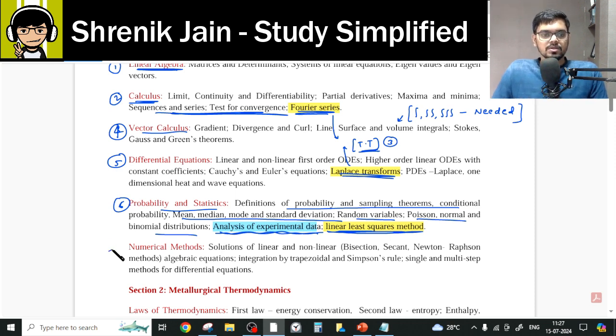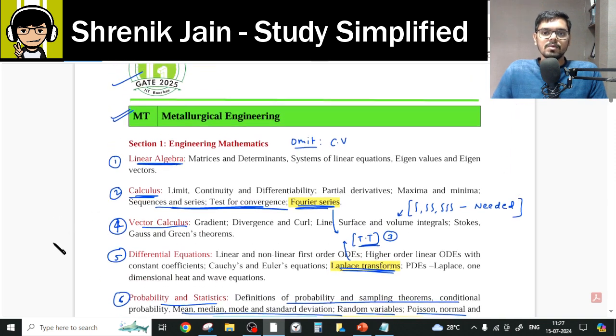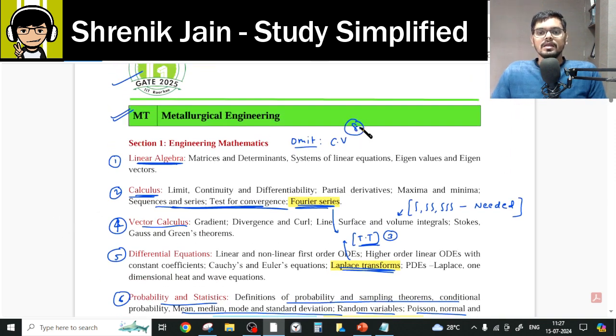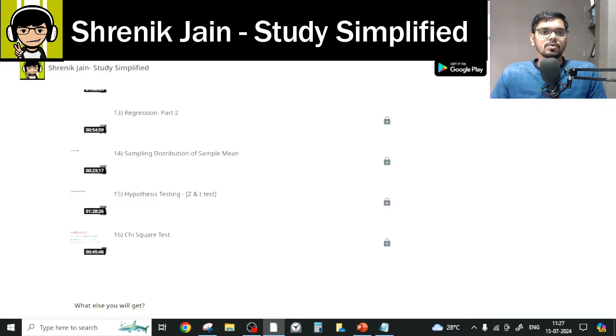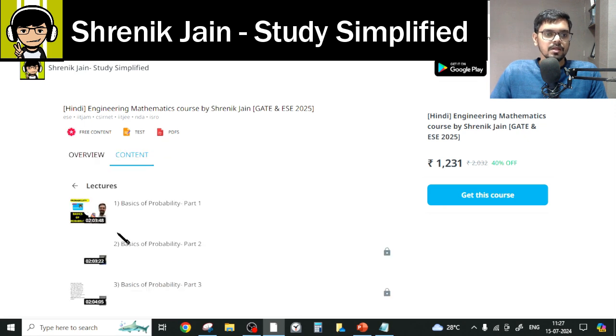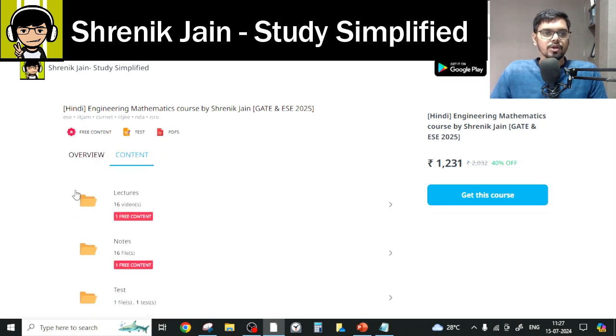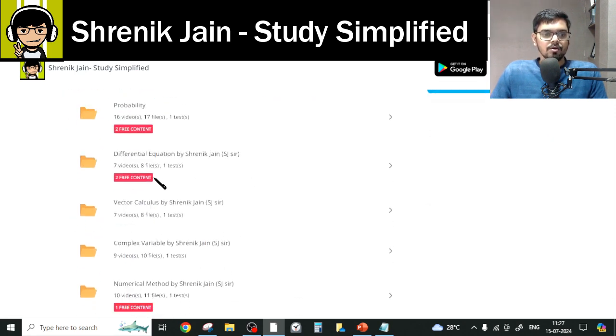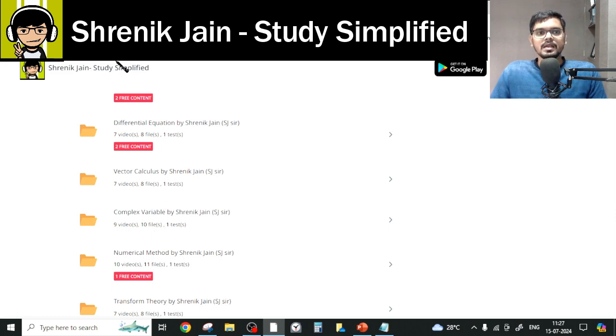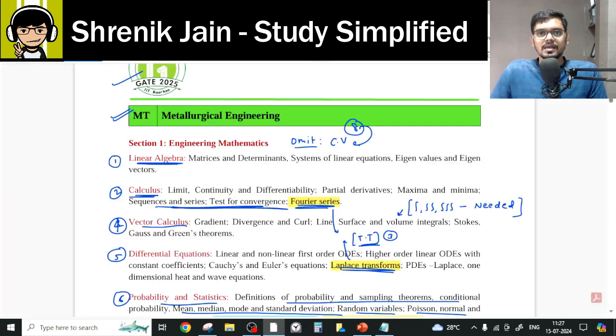And comes the 7th chapter, Numerical Method. Everything you have to watch, nothing can be skipped. The only skip is there in this chapter: Complex Variable. Complete chapter is omit for you. So if you go to my course, you will see Complex Variable folder. You do not have to watch that Complex Variable folder. Nine lectures were there. That is the concession you are getting. You do not have to watch that.